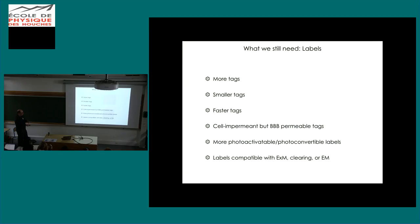So just to finish up the labels. We need more tags. We really only have a few, Snap tag, Halo tag. They're big. We need them smaller. We need tags that are faster. Sometimes you have to label for a very long time. It'd be nice to have cell impermeant but blood-brain barrier permeable tags. Things that would get to the brain, maybe put on an antibody but not get inside a cell. We need more photoactivatable and photoconvertible labels. We also need labels that are going to be compatible with expansion microscopy, clearing, or electron microscopy.